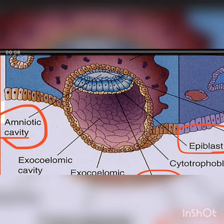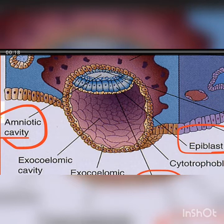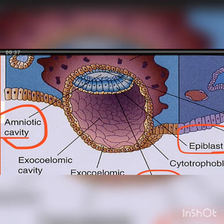Meanwhile, the cells of the hypoblast start proliferating and migrating towards the cytotrophoblast. The hypoblast cells form a membrane called the exocoelomic membrane or Heuser's membrane. Soon Heuser's membrane surrounds the whole blastocyst and forms a new cavity called the exocoelomic cavity, or primary yolk sac, at the place of the previous blastocoel.